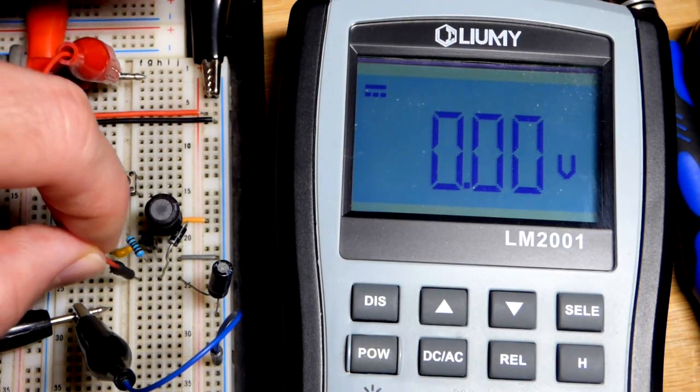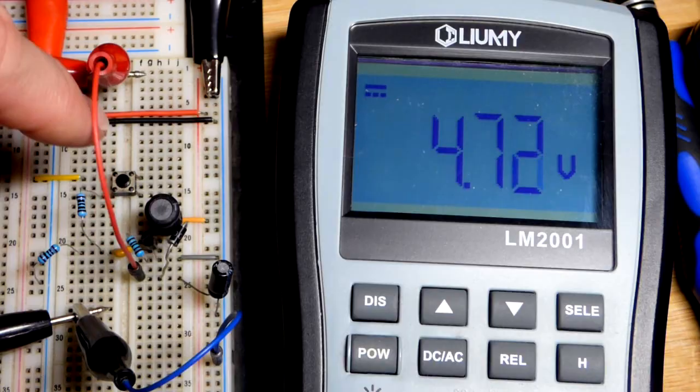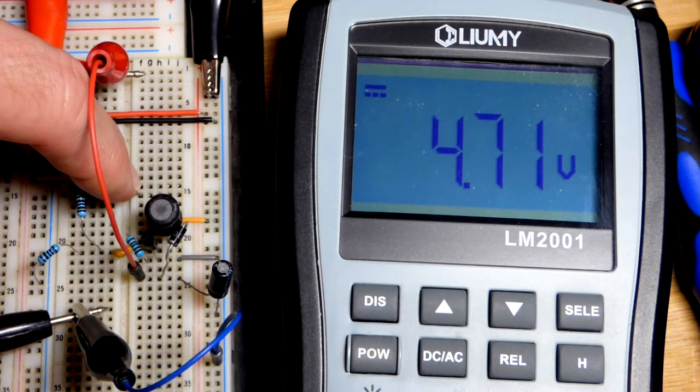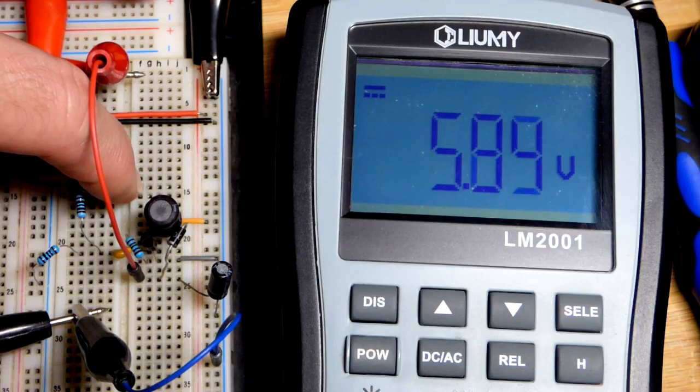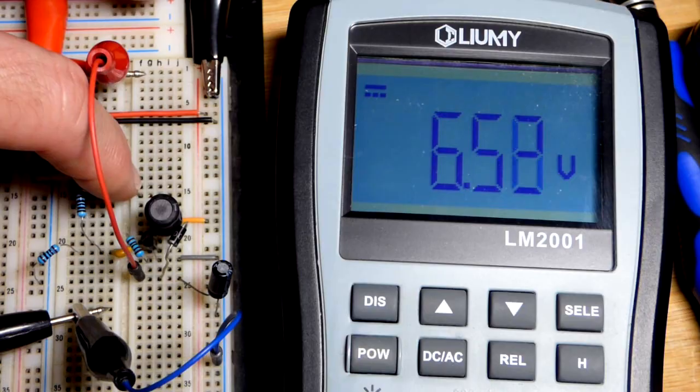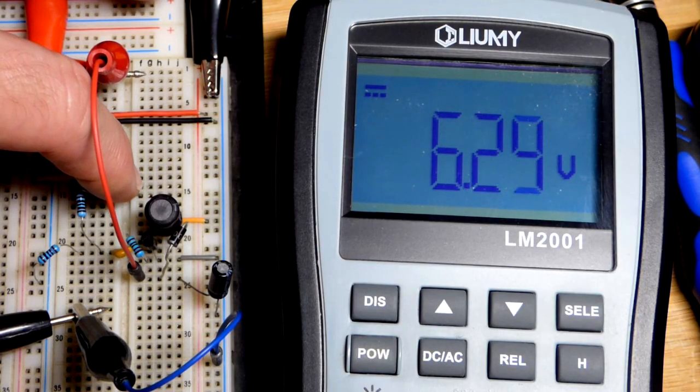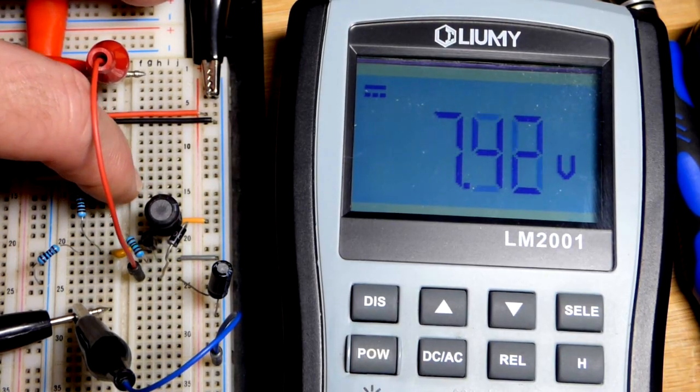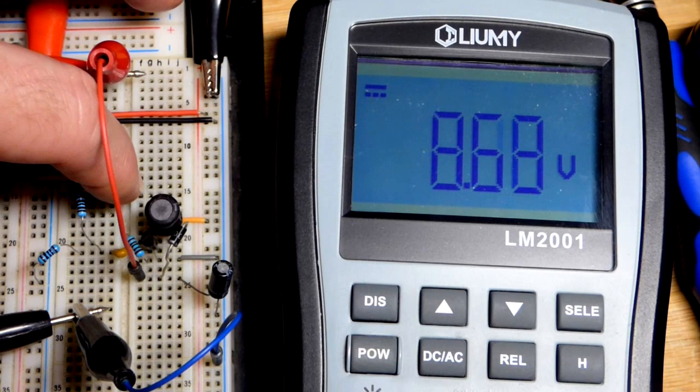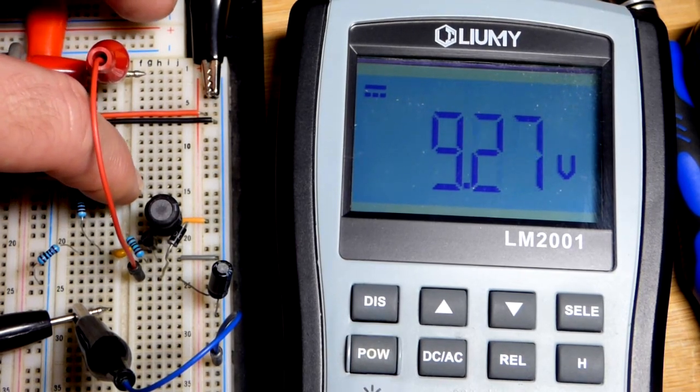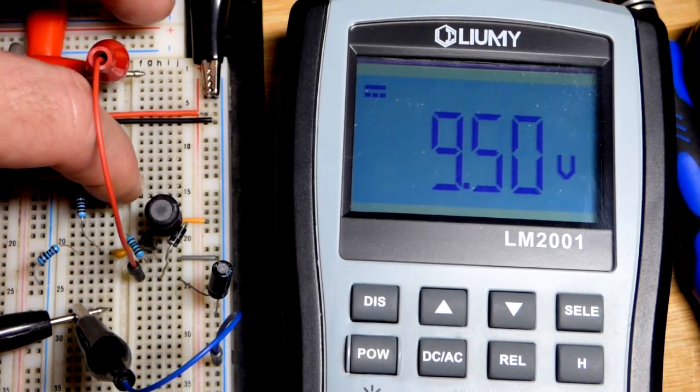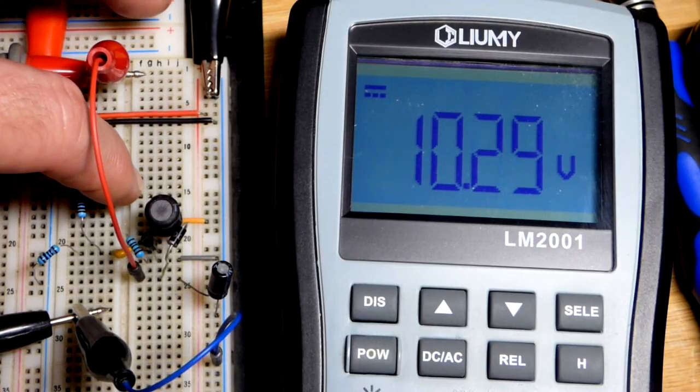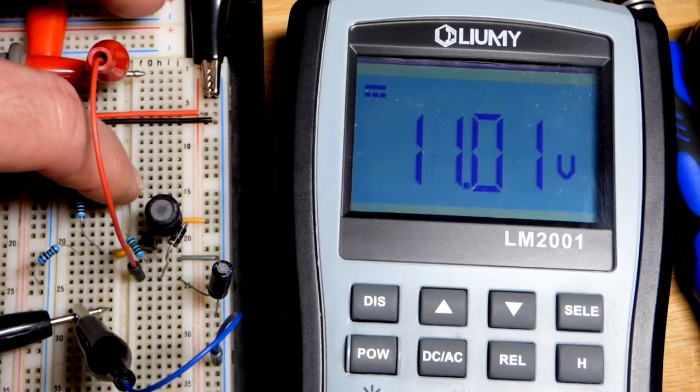Because when you got changing voltages, auto ranging meter takes forever to show the voltage on the display. But in case we press the button, doesn't matter how long I press it, voltage is gonna go up all right there.